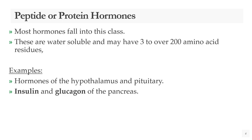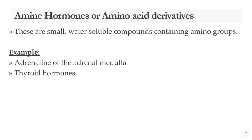Peptide hormones, also called protein hormones, represent the largest class of hormones. These are water soluble and may have three to three hundred amino acid residues. Examples include hormones of the hypothalamus, and insulin and glucagon of the pancreas.